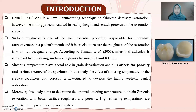Sintering temperature plays a vital role in grain densification and affects the porosity and surface texture of the specimen. During this study, the effect of sintering temperature on the surface roughness and porosity is investigated to develop a highly aesthetic dental restoration. This study aims to determine the optimal sintering temperature to obtain zirconia restoration with better surface roughness and porosity. High sintering temperatures are predicted to improve these characteristics. Figure 1 shows the zirconia crown.